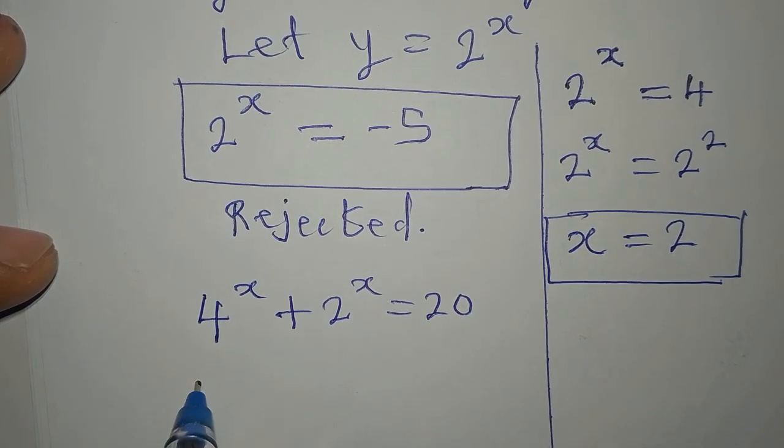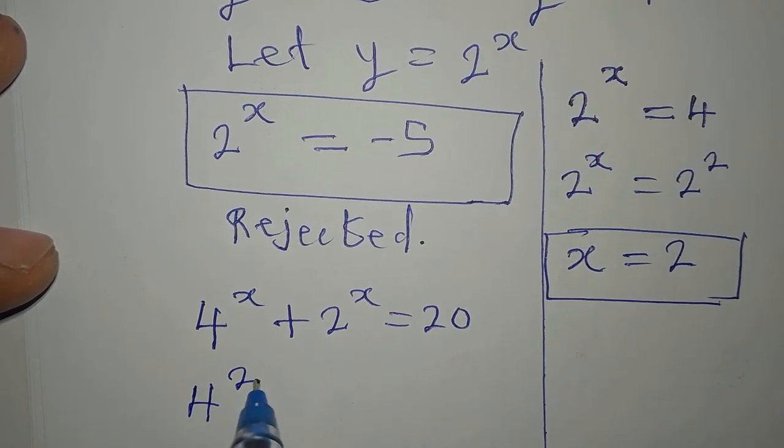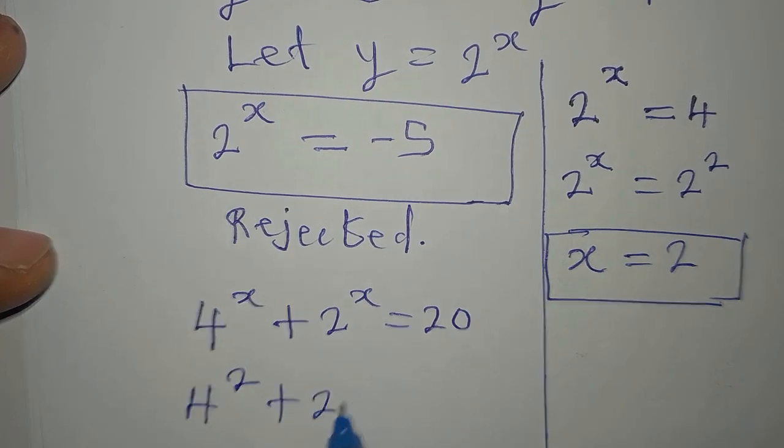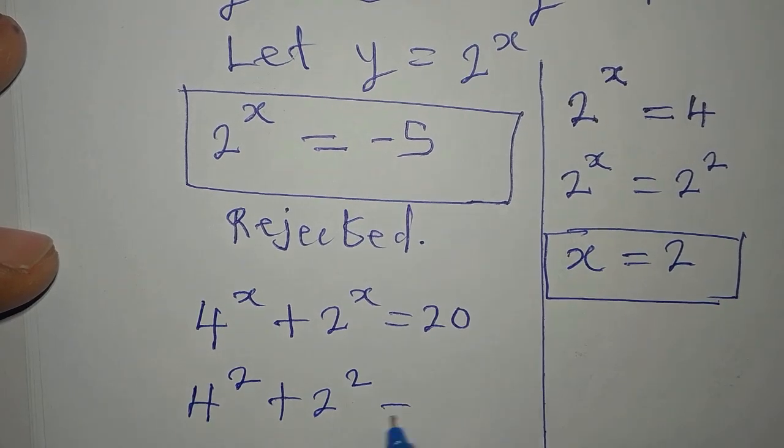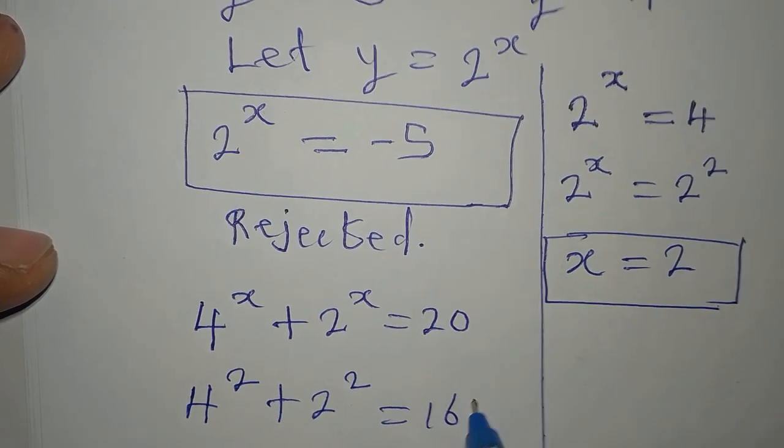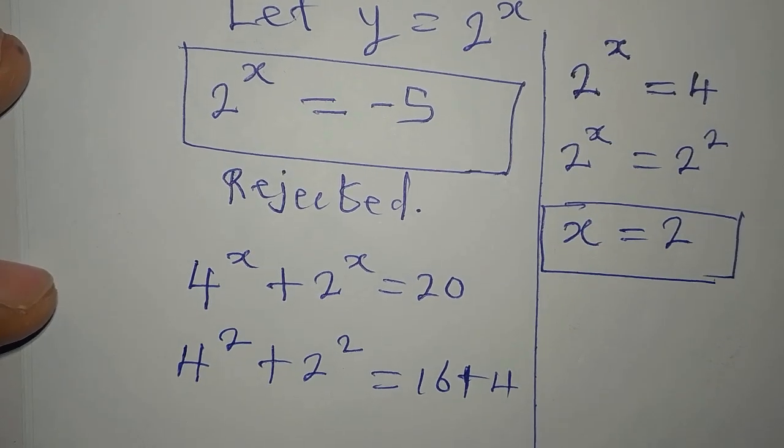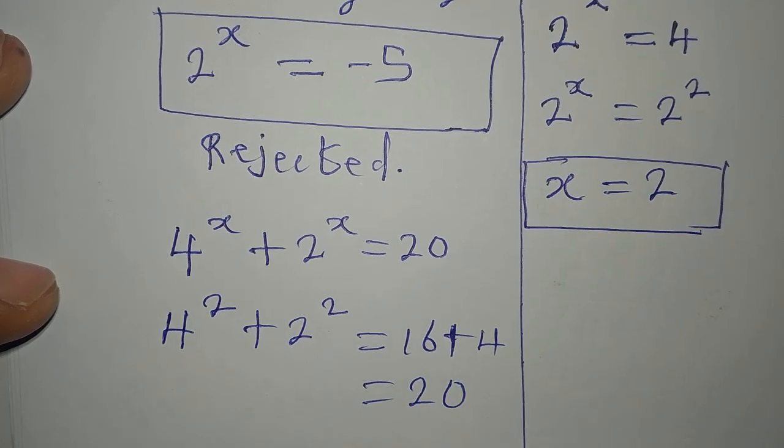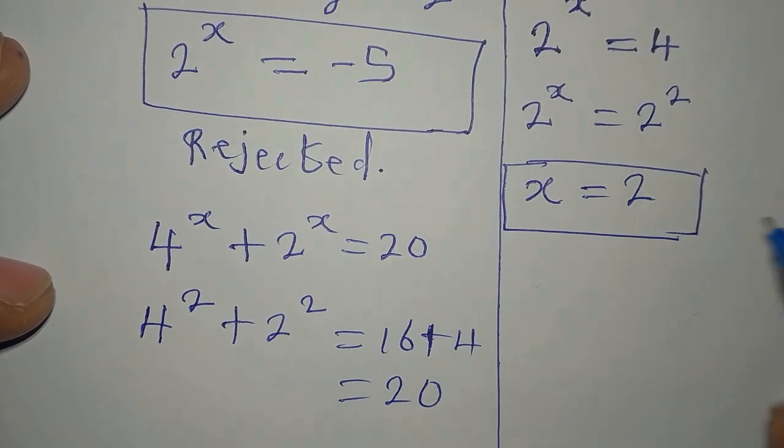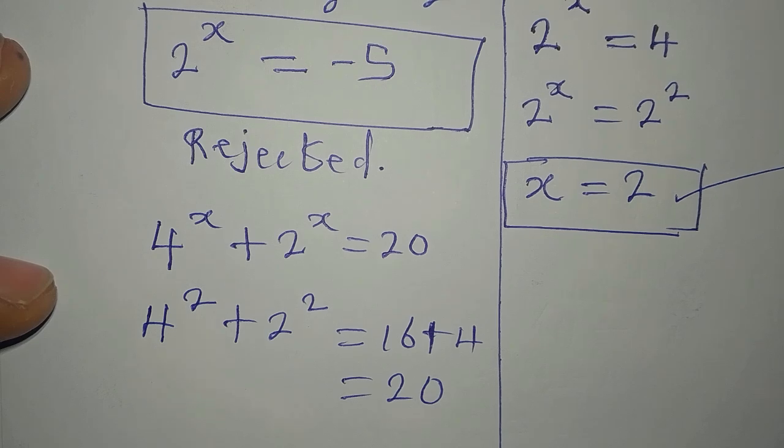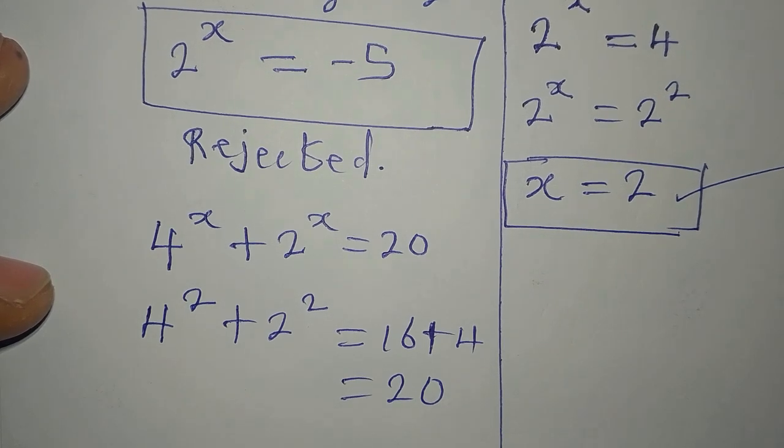If I put 2 here, I have 4 to the power of 2 plus 2 to the power of 2. And this means we have 16 plus 4. And 16 plus 4 is 20. So this means that x equals 2 is very satisfying.